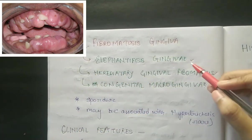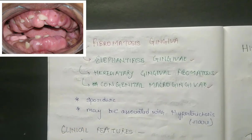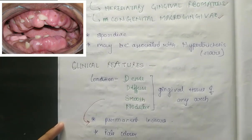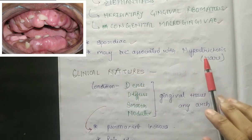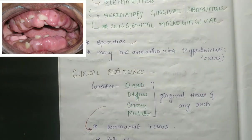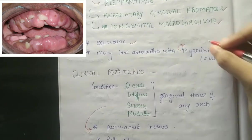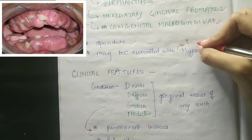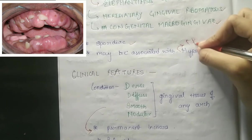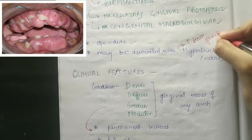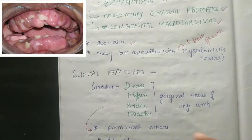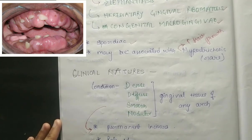Fibromatosis gingiva is sporadic and may be associated with hypertrichosis, meaning increase in hair growth. It is very rare that fibromatosis gingiva is associated with hypertrichosis, but it is seen in rare cases.